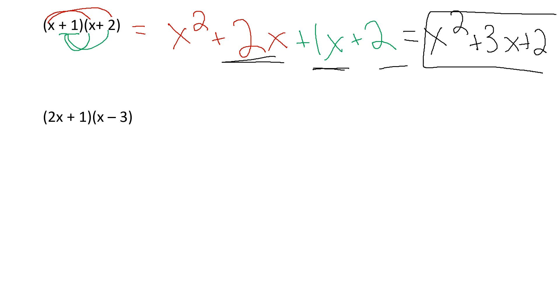So let's do this again. Nothing I can simplify in either one of these pieces. So I'm going to take my first term, my 2x. Multiply it to both pieces. 2x times x is 2x squared. 2x times negative 3 is negative 6x. 1 times x is 1x. 1 times negative 3 is negative 3.